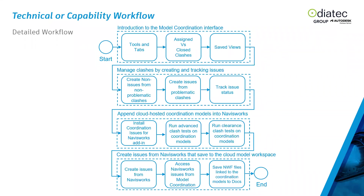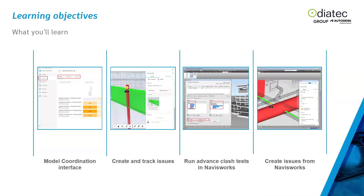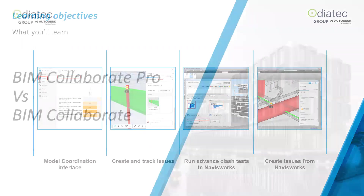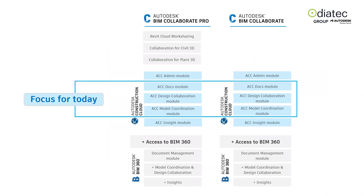The detailed workflow is in the slides — you can review those via the recording. What we're going through today is: the Model Coordination interface, how to create and track issues, running clash tests in Navisworks, and creating issues from Navisworks. Whichever subscription you have — BIM Collaborate or BIM Collaborate Pro — you have access to Model Coordination.